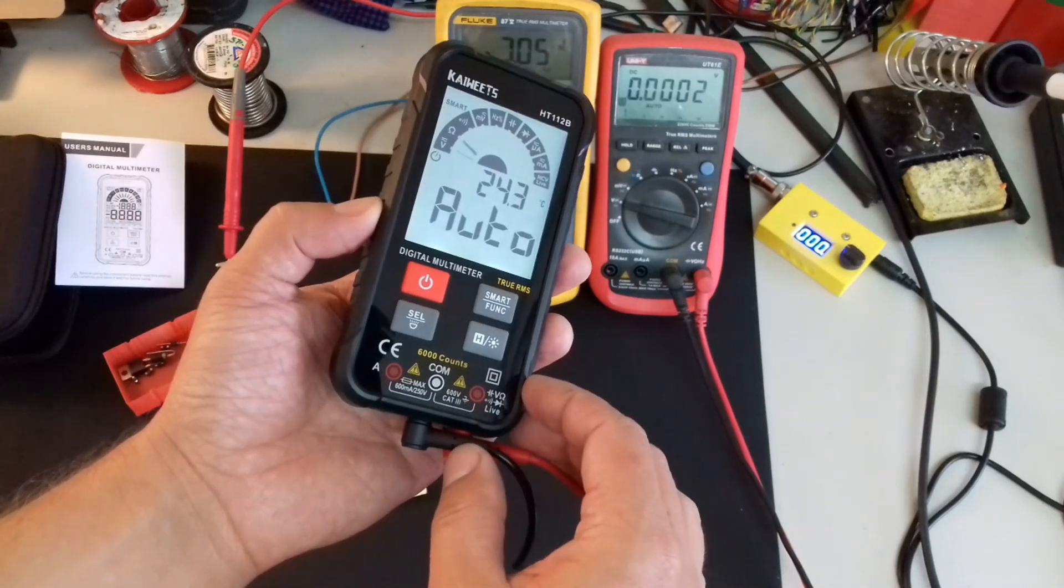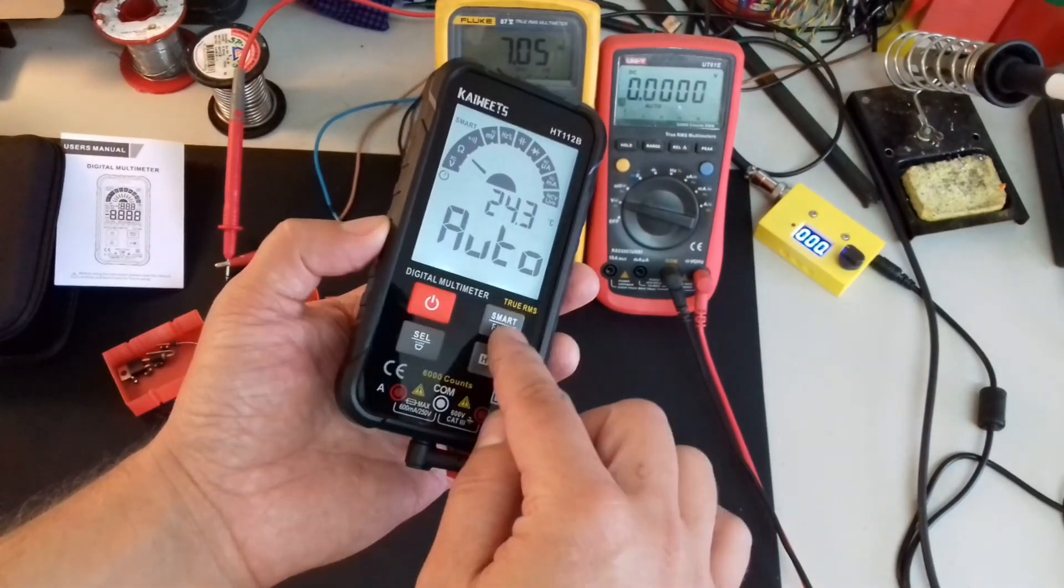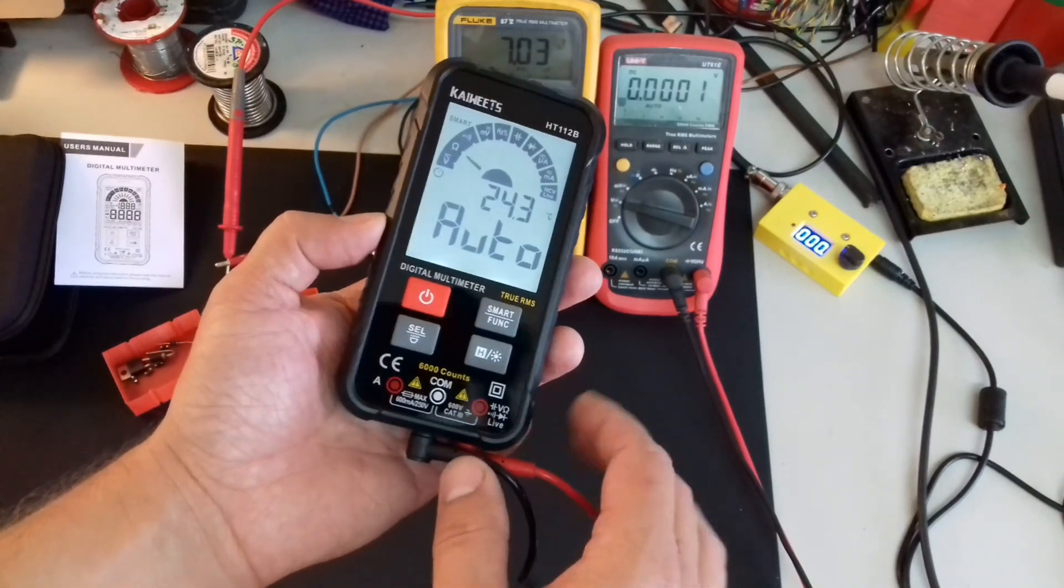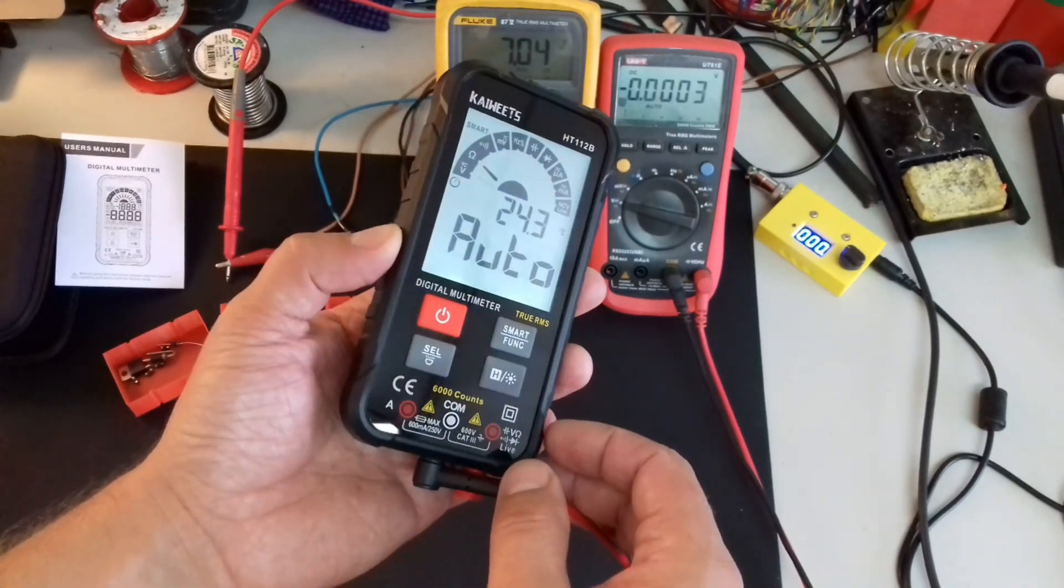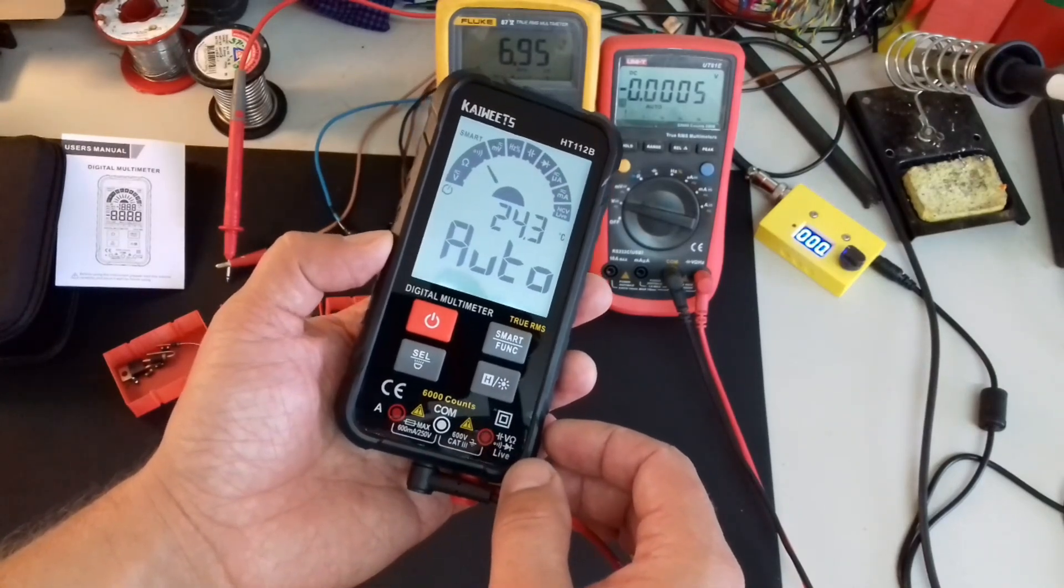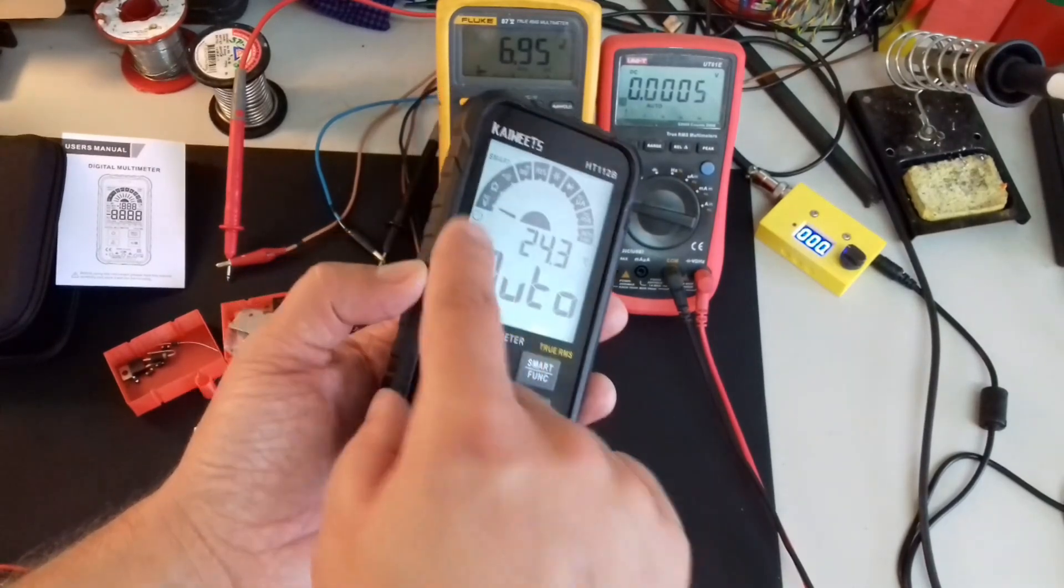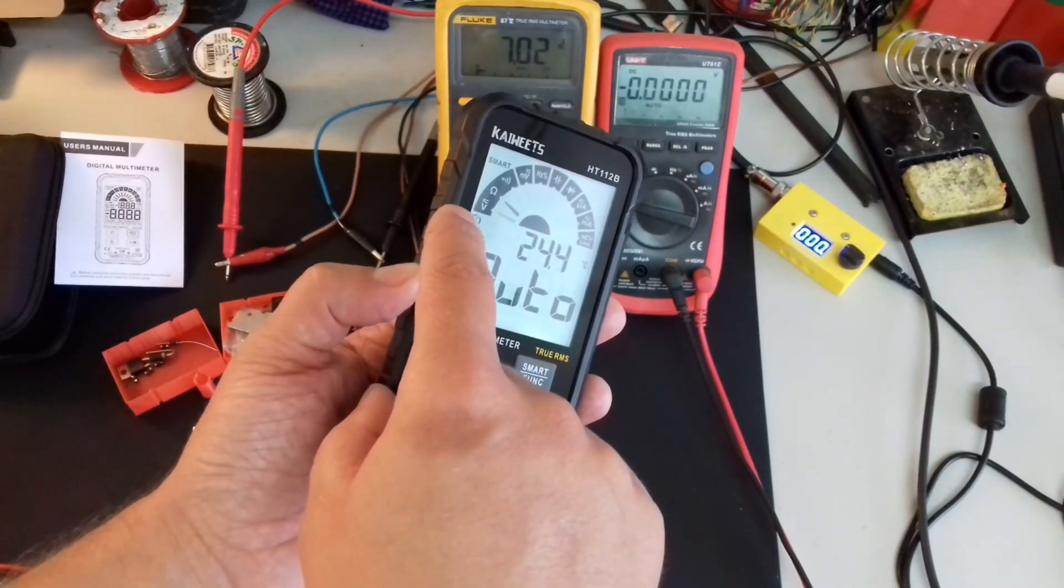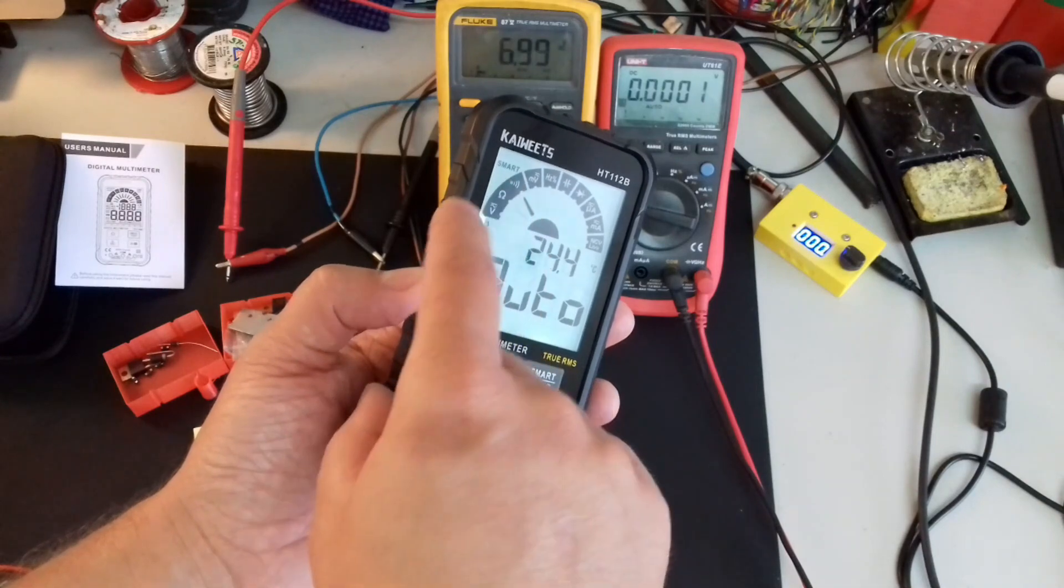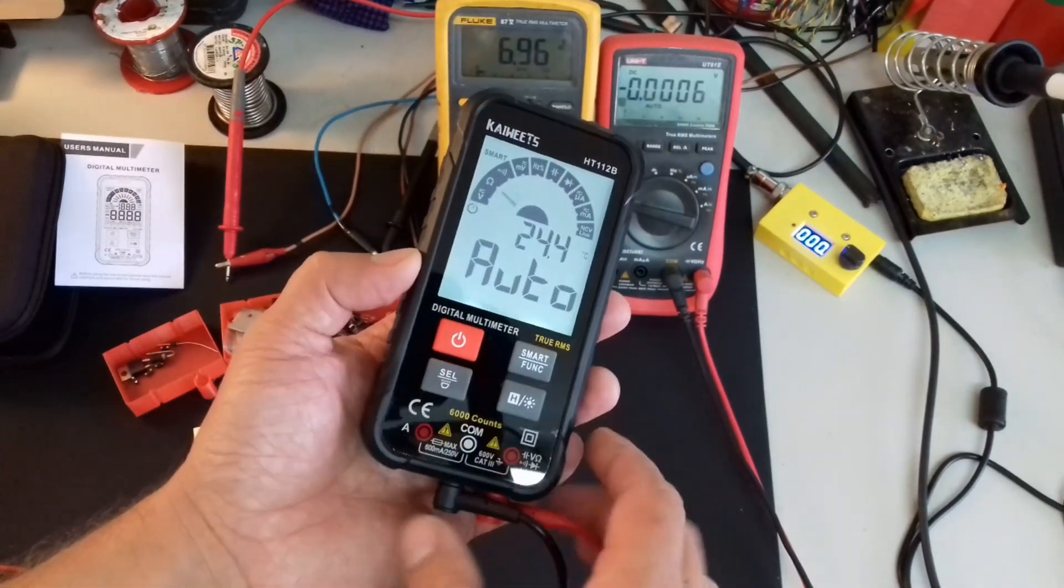And this multimeter actually claims that it's a true RMS one. So we're gonna put this to test, but first, some of the functions that this multimeter is having. So, as you can see, it is having voltage measurement, both DC and AC, ohmmeter, continuity buzzer.